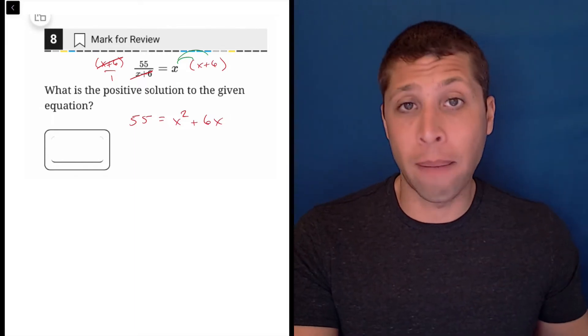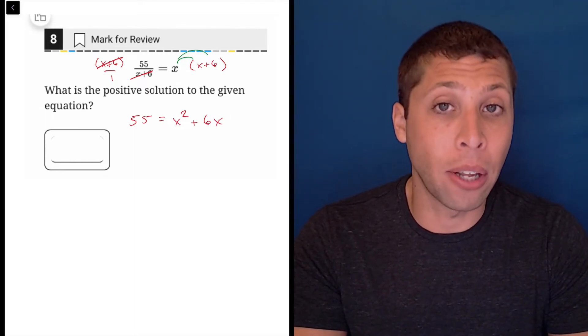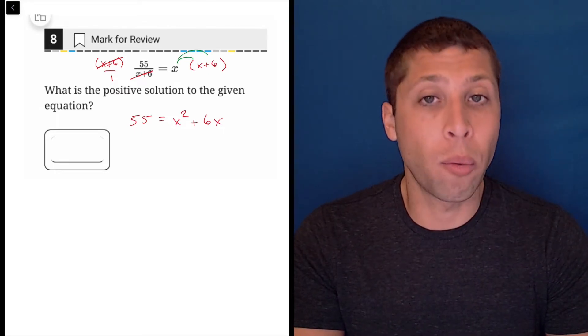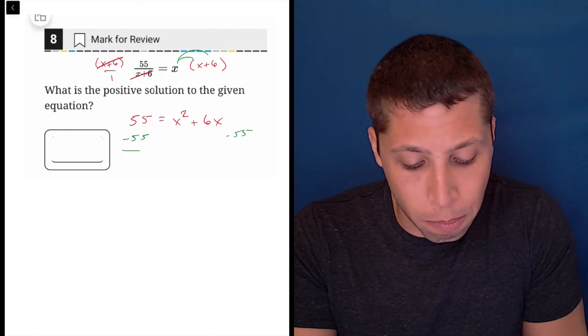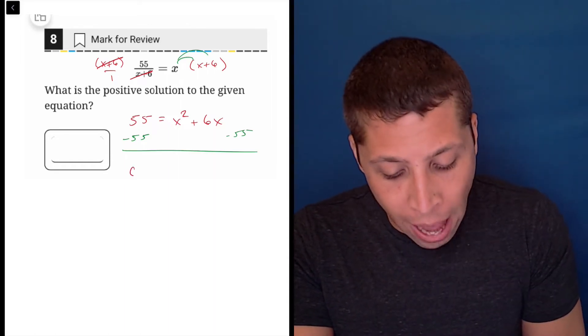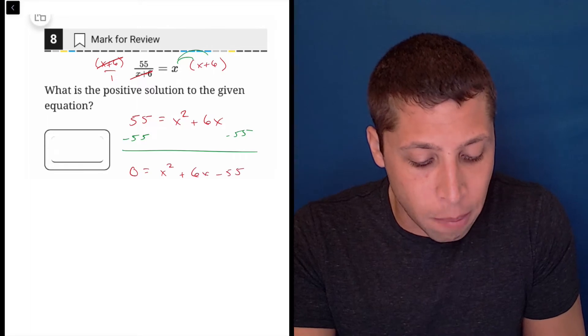And then every time that we have a quadratic, anytime we see an x squared, we really want to get everything equal to zero so that we can factor. So I would subtract 55 from both sides. That would get me zero is equal to x squared plus six x minus 55.